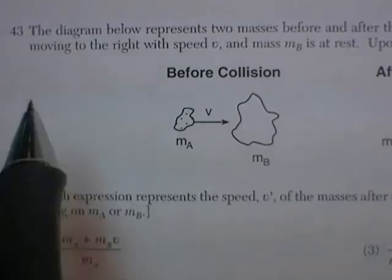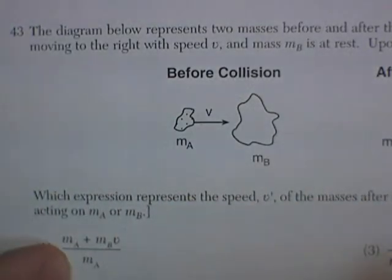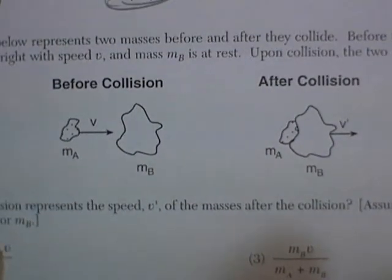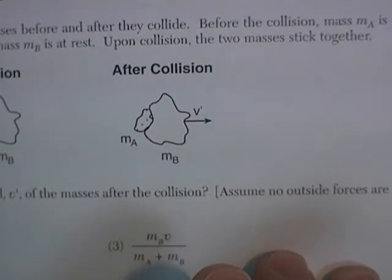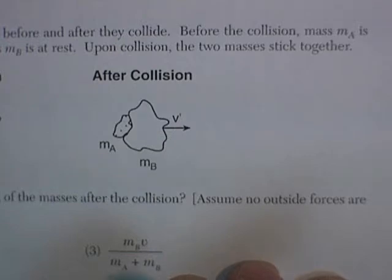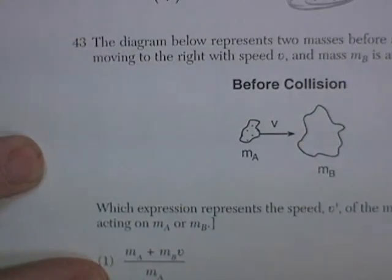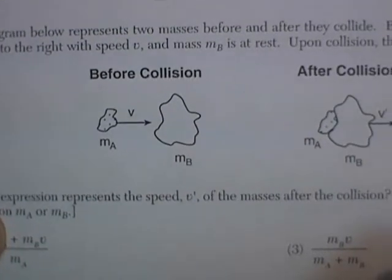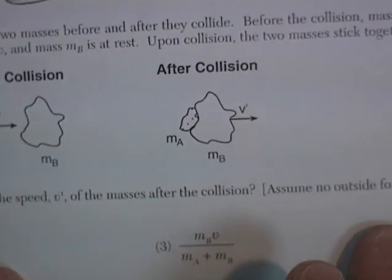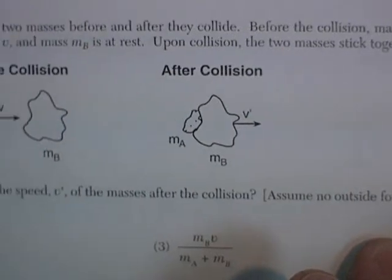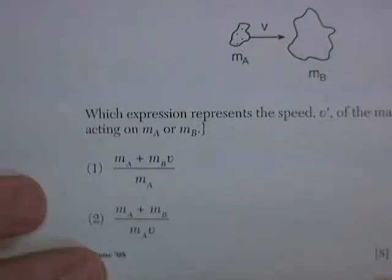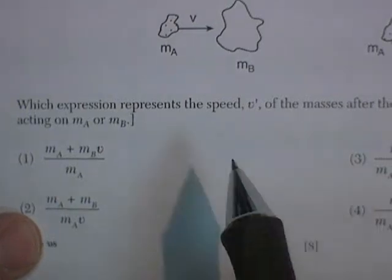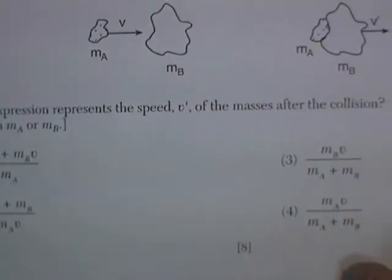Question 43. The diagram below represents two masses before and after they collide. Before the collision, mass A is moving to the right with speed V, and mass B is at rest. Upon collision, the two masses stick together. Which expression represents V prime — the velocity of the masses after the collision?